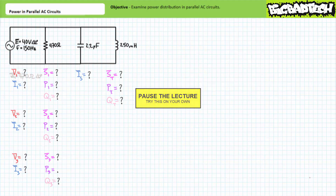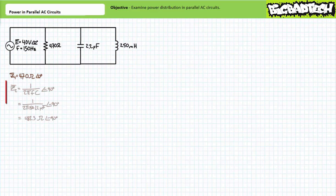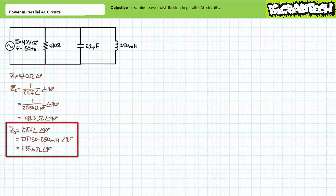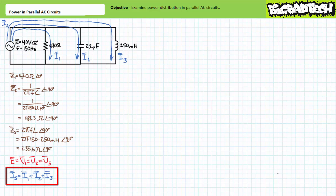If you're tracking, you should have obtained the following results. The complex impedance of the 470 ohm resistor is 470 ohms at an angle of zero degrees — let's call this Z1. The complex impedance of the 2.2 microfarad capacitor at 150 hertz is approximately 482.3 ohms at an angle of negative 90 degrees — let's call this Z2. The complex impedance of the 250 millihenry inductor at 150 hertz is approximately 235.6 ohms at an angle of 90 degrees — let's call this Z3. Voltage across elements in parallel is the same: supply voltage E equals V1, equals V2, equals V3. A Kirchhoff's current law analysis suggests source current equals I1 plus I2 plus I3.